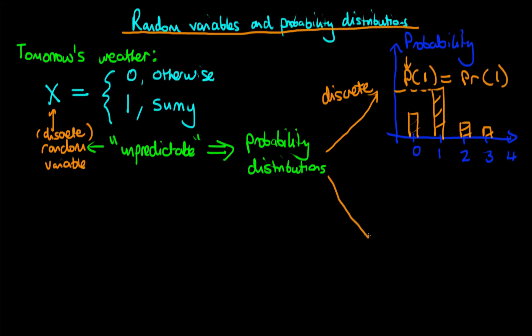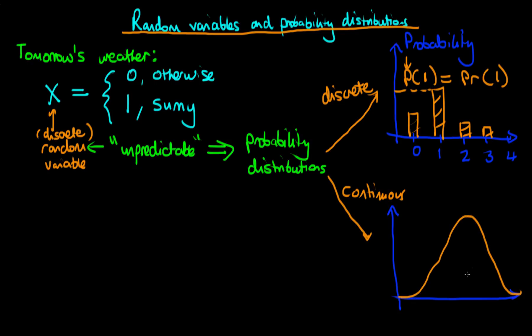There are also probability distributions associated with continuous random variables. For example, imagine we were measuring the weight of an individual, their height, or the return of a stock. Here, our probability distribution function looks like a continuous function — there are no discrete steps as in the discrete case. The vertical axis doesn't actually represent a probability; it represents something known as a probability density. I'll explain that in due course in another video, but I just want to highlight it right now.